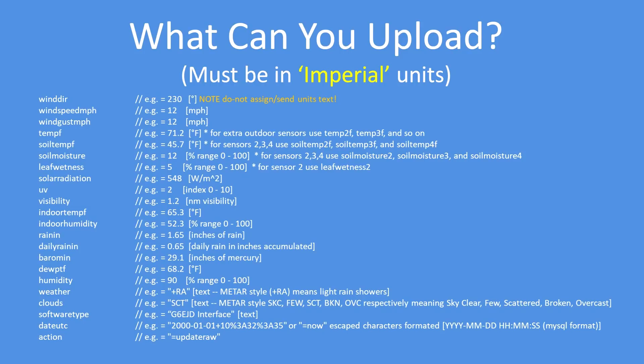My preference is to always use datetime equals 'now' rather than calculating the current time, because you just send the word 'now' and Weather Underground assigns the data reception date and time for the data.